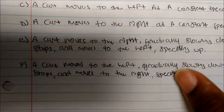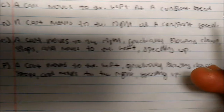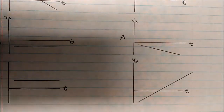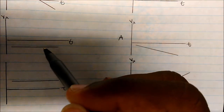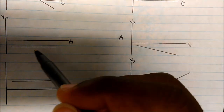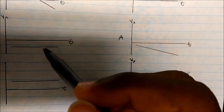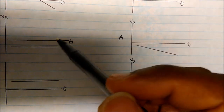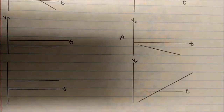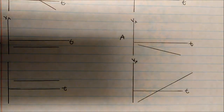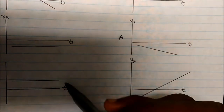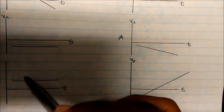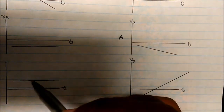For D, it says a cart moves to the right at a constant speed. The opposite must be true — this one is moving in the positive x direction. We know this line is constant and it's above the zero mark, so it's actually moving to the right at a constant speed. Therefore, this must be D.